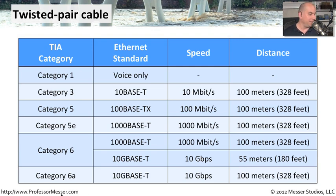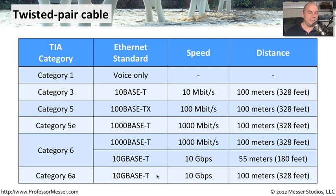That's where category 6a — the augmented category 6 — comes in. It allowed us to run the same 10GBase-T standard at 10 gigabits per second, but now we could go all the way up to 100 meters of 10-gigabit ethernet over that twisted pair cabling.